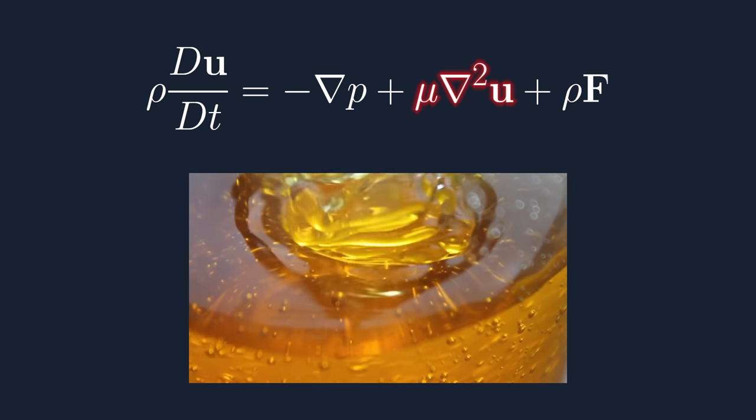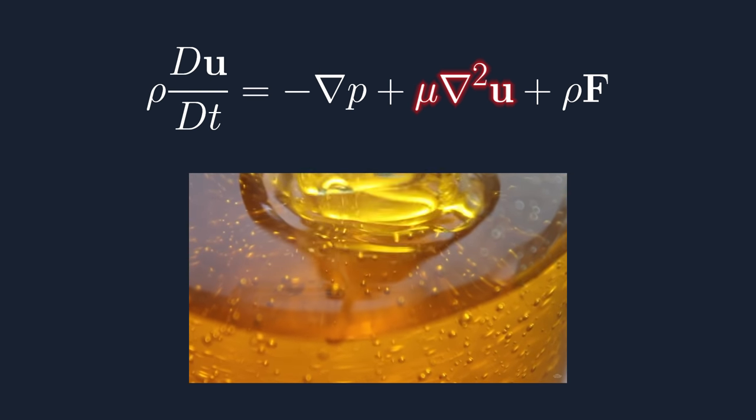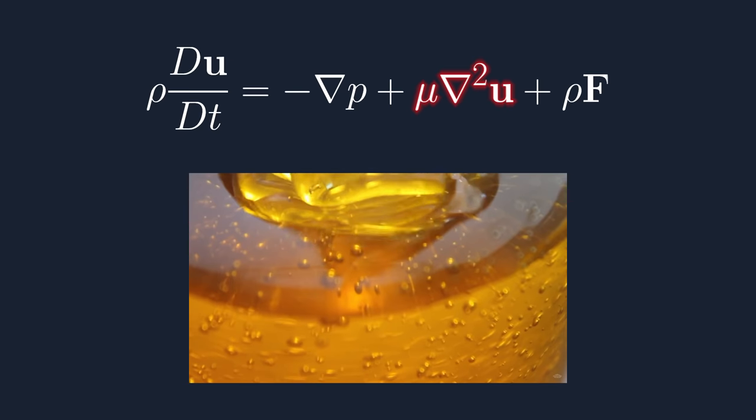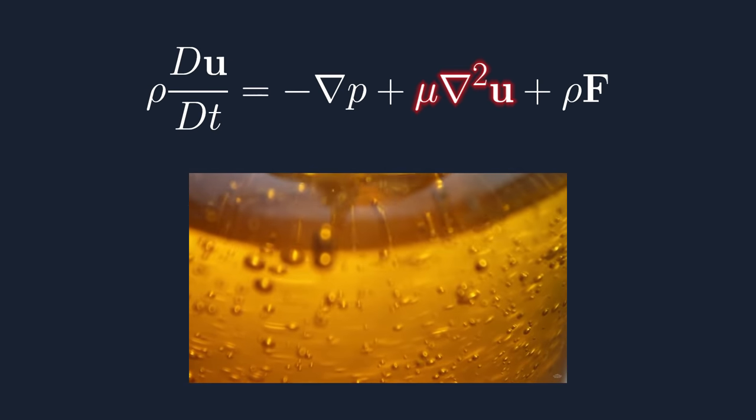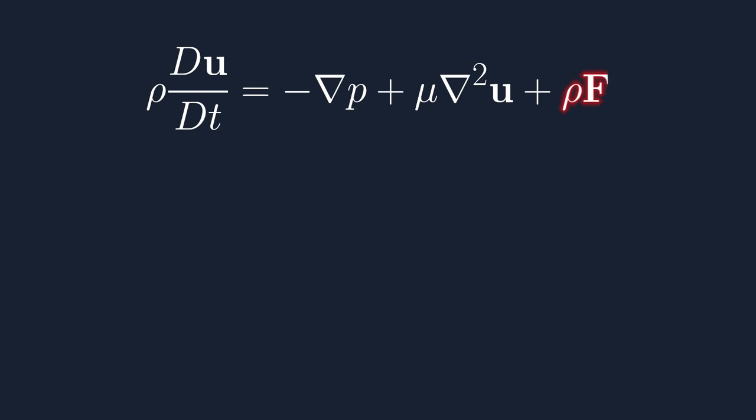A higher viscosity means that there is a higher friction between the fluid's particles, and the velocity in the fluid in one spot will more easily spread out to surrounding areas. External forces just include things such as gravity and interference by objects in the fluid or surrounding walls.